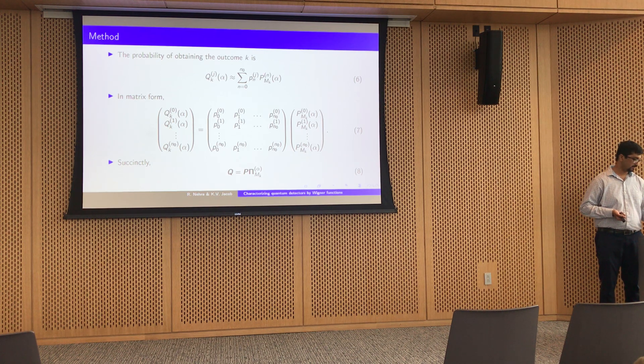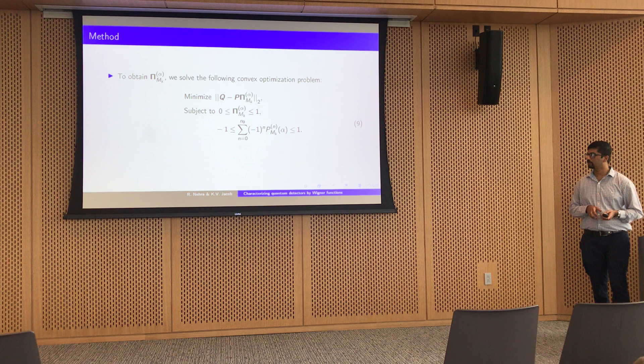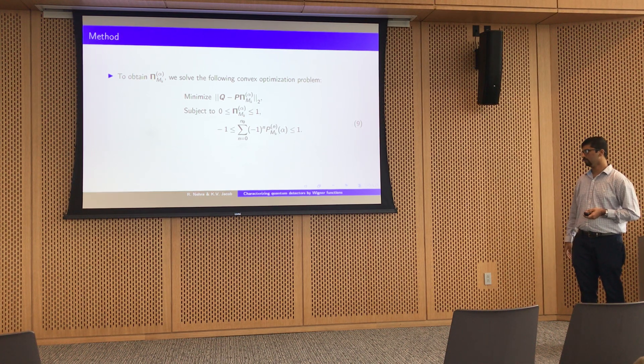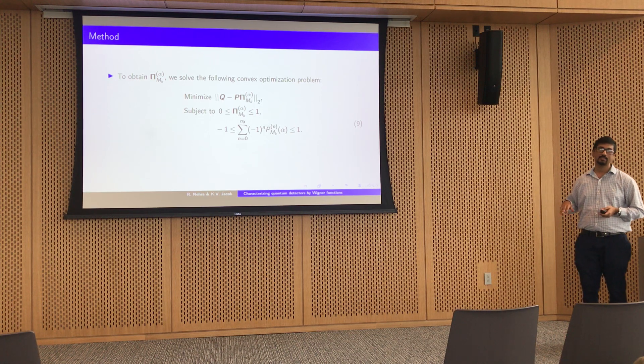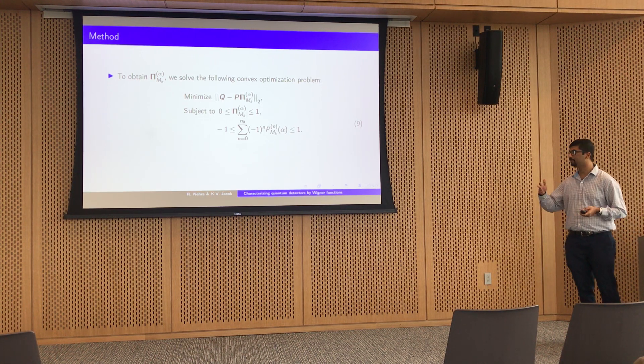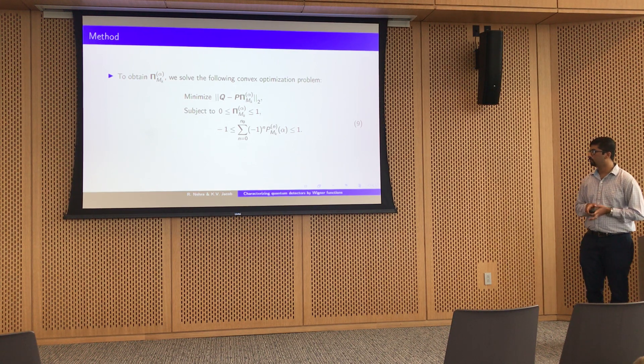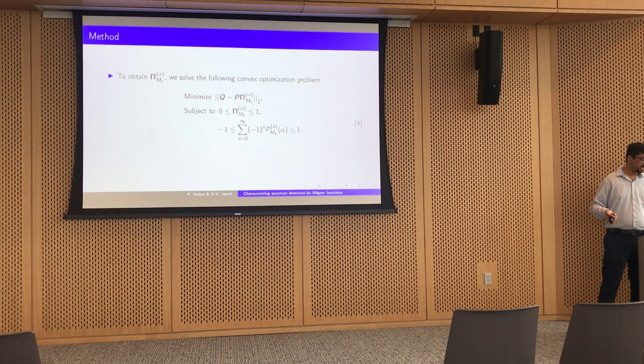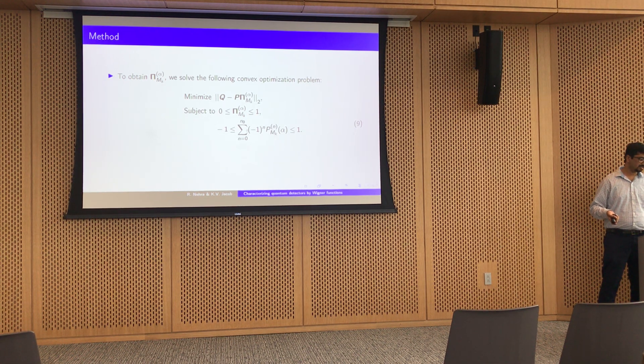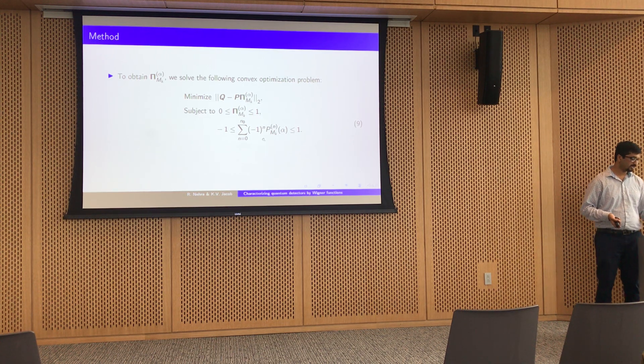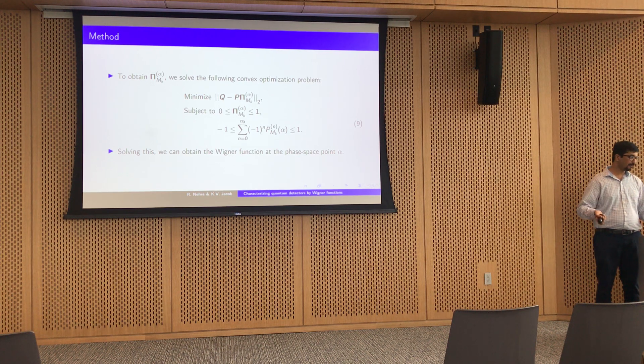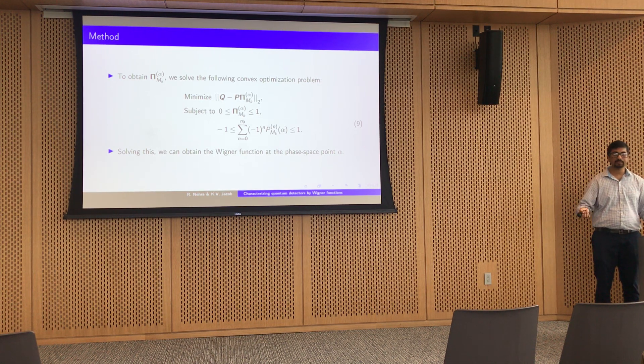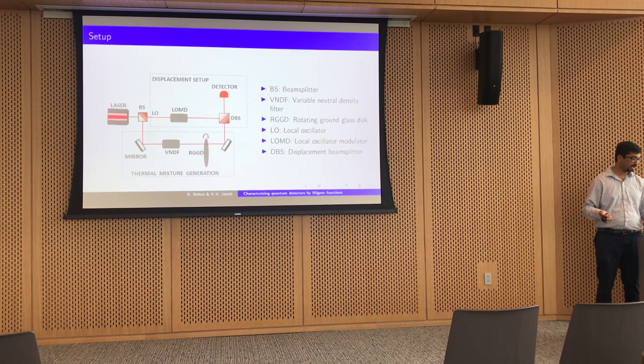For solving this, we have a convex optimization problem. We minimize the two norm of Q minus P pi, and it is subject to certain constraints that the probability distributions should obey. So pi is between 0 and 1, or all the elements are between 0 and 1, because they are probabilities. Here also, since the weighted sum lies between minus 1 and 1. If we solve this, we can obtain the Wigner function at one particular phase space point, and if we do this for multiple phase space points, then we can characterize the detector.